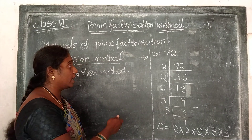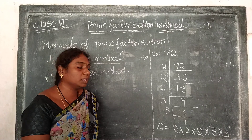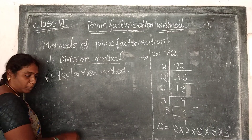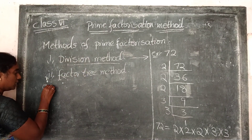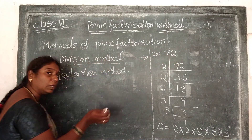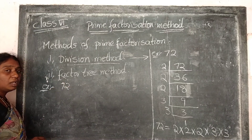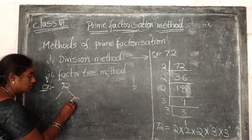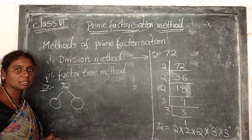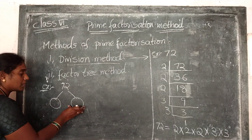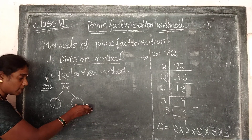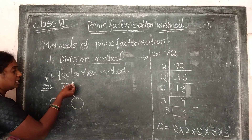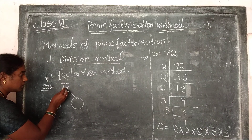Take your own numbers and try the division method yourself. Now coming to the next one — what is the second method? Factor tree method. I am going to explain the factor tree method here, using 72 as an example. Here also I am going to take 72.